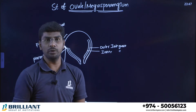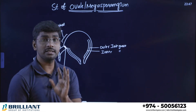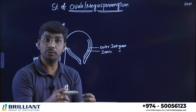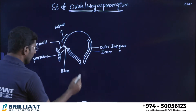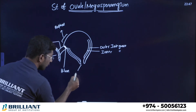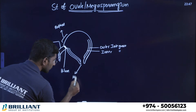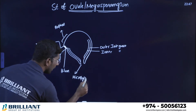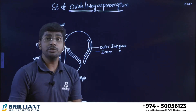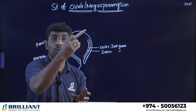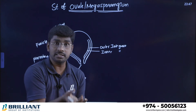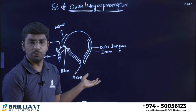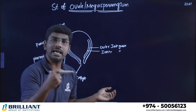If you look closely at the diagram, there is one area where the integuments are not completely covering the ovule — where the integuments are absent. That area is known as the micropyle. The micropyle is present at the lower side of the ovule, and this type of ovule orientation is called anatropous.